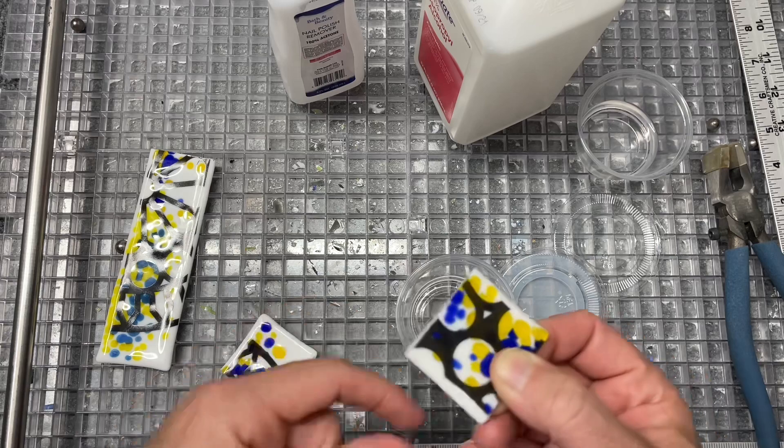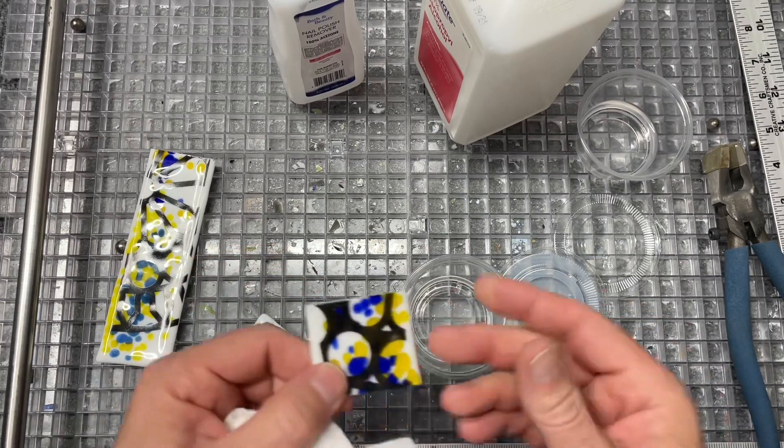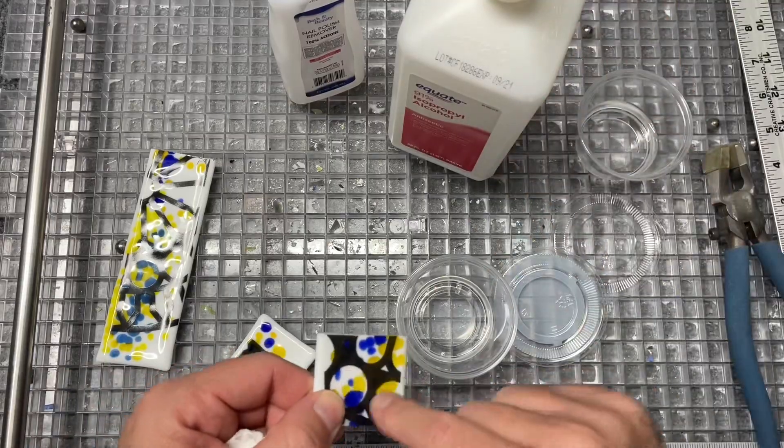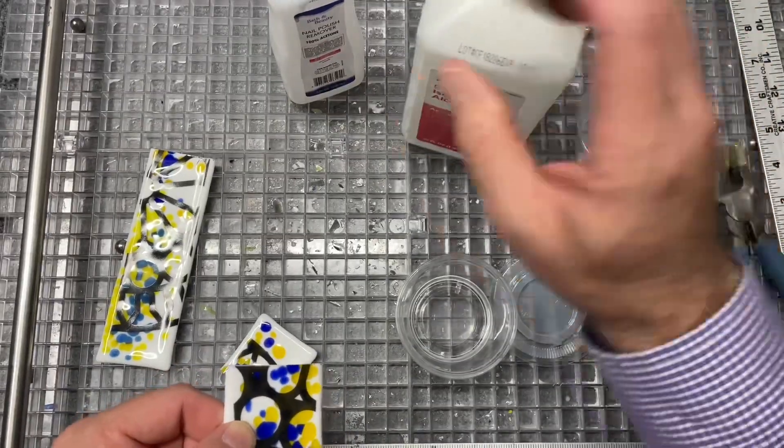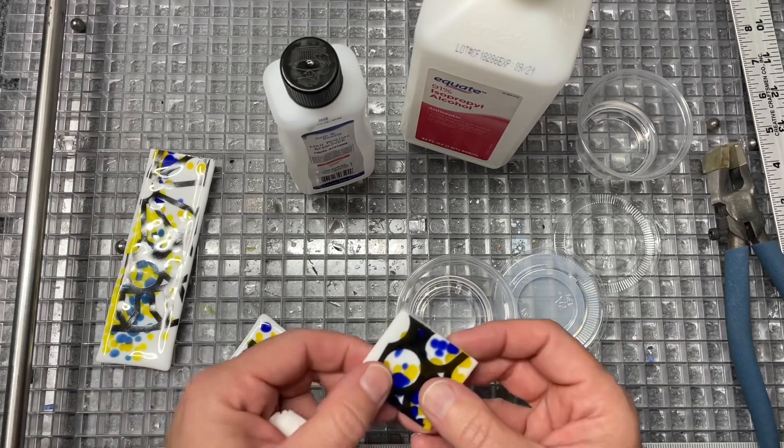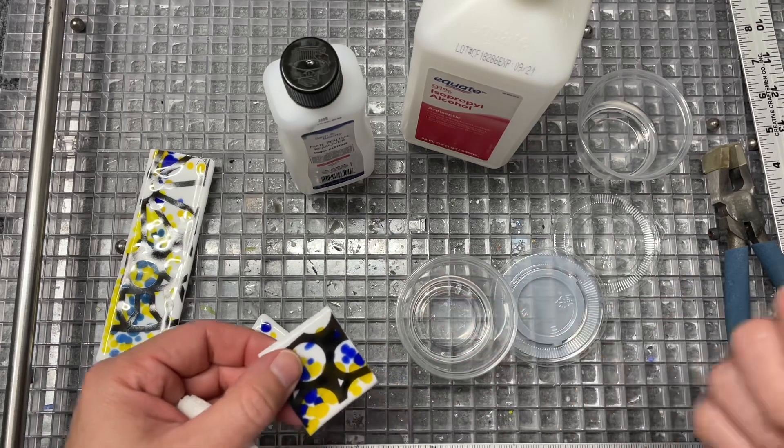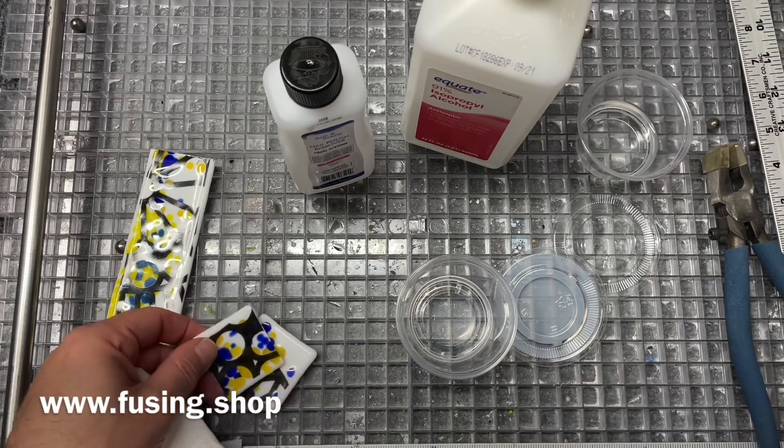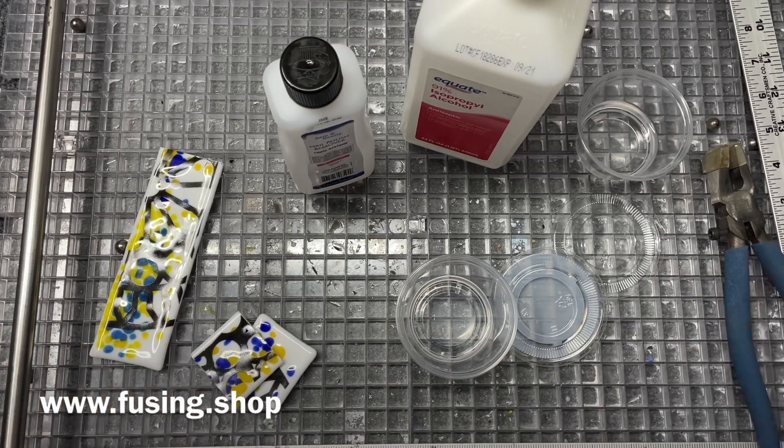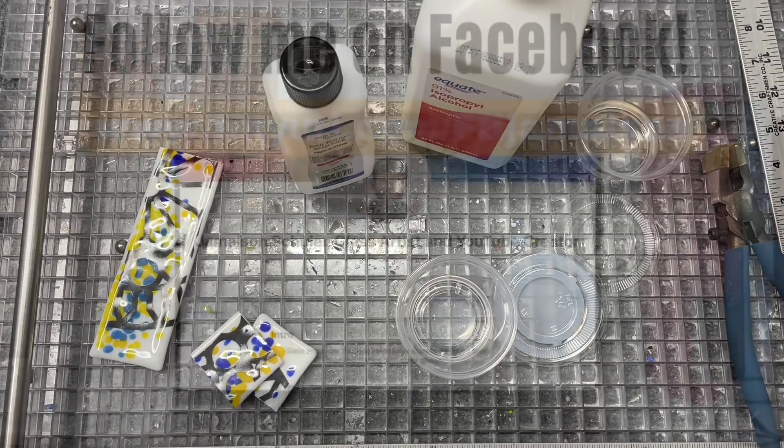So for those of you who are curious, after the decal has been fired, alcohol and acetone have no impact. If you find yourself in the situation where you've glued on something that you want to remove and need to soak it, there you go - looks like it'll work. Hope everything's going well. If you're interested in my decals, you can find them at www.fusing.shop. Take care everybody, bye!